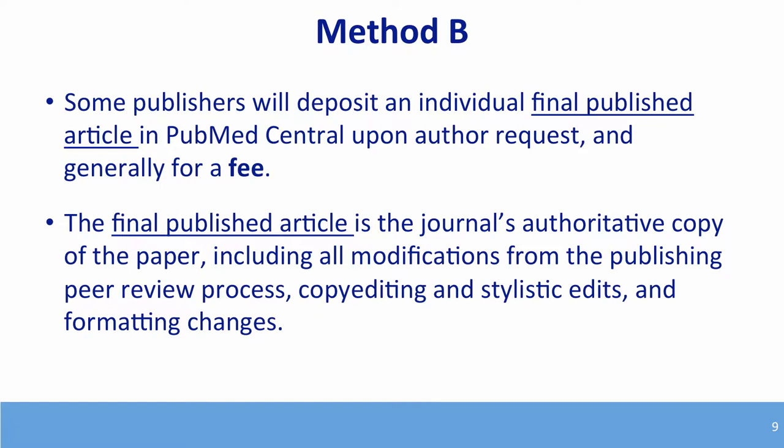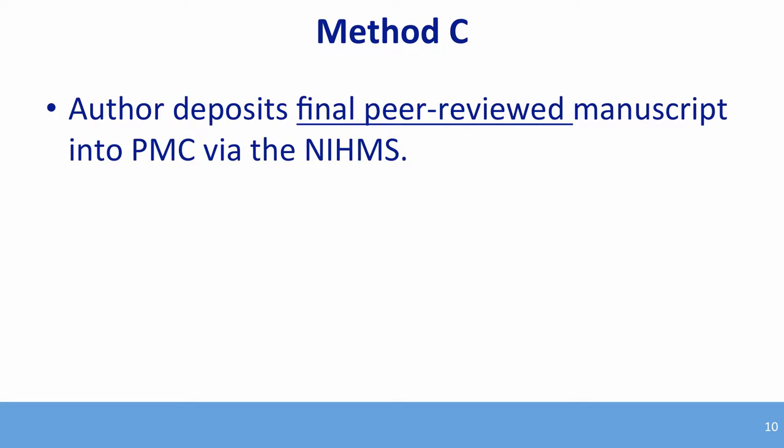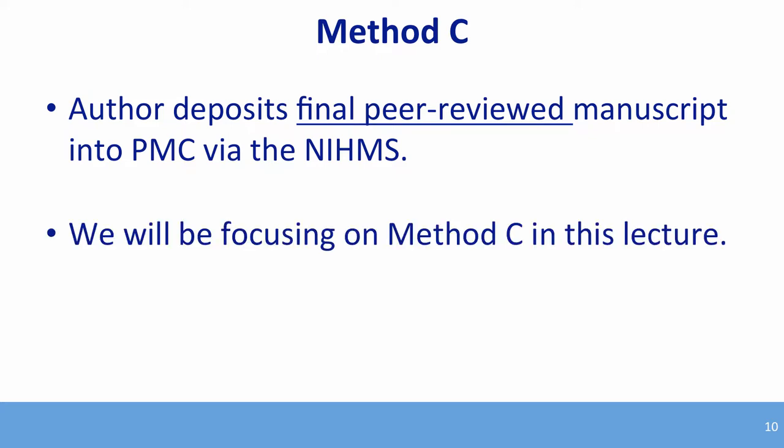The final version is the authoritative version where all corrections and typesetting have been made and images appear exactly as they will in the journal. Method C is where the principal investigator, support staff, or an author deposits the final peer-reviewed version of the manuscript into PubMed Central through the NIMS NIH manuscript submission system — this is what we'll be focusing on.